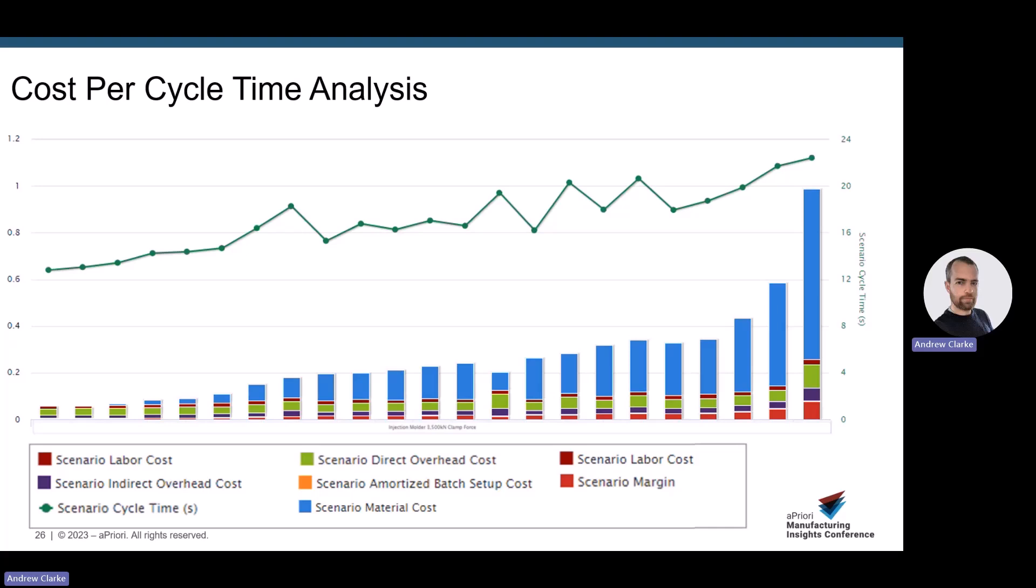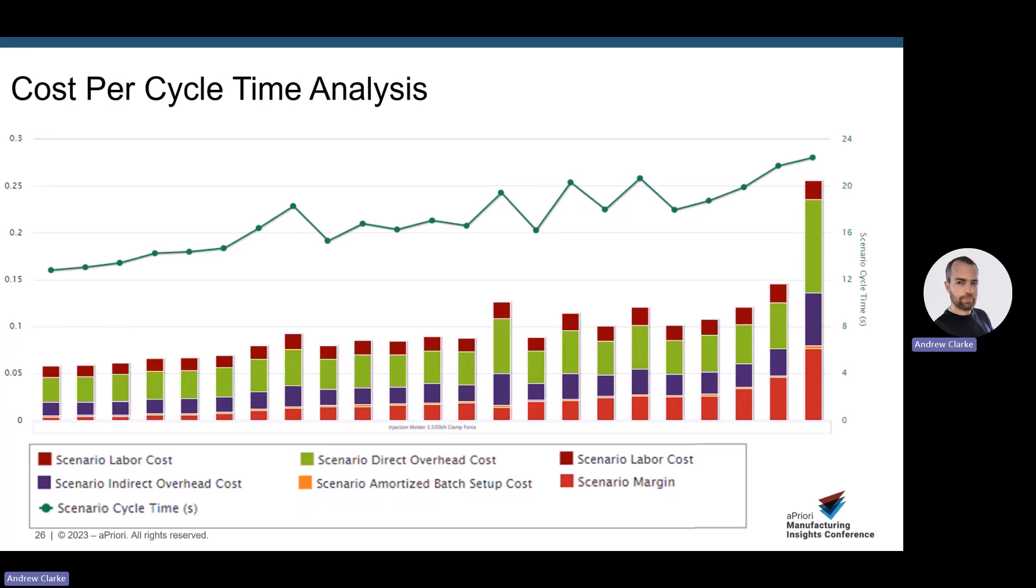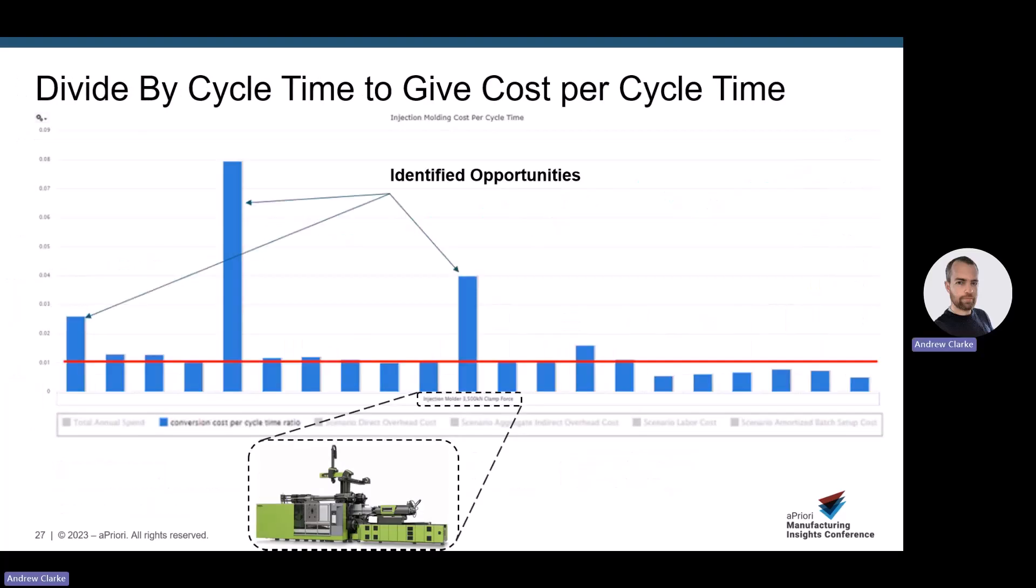If we back out the material cost, which we should have an idea of given the commodity pricing, and any associated SG&A and margin for that material, we're left with the manufacturing cost. If we then divide this manufacturing cost by the cycle time, we get our cost per cycle time, or you can think of it as the manufacturing rate for these parts. Given we filtered on parts that are manufactured on the same size machine, we would expect them to have the same manufacturing rate. From a plot like this, we can identify our trend and also our outliers.